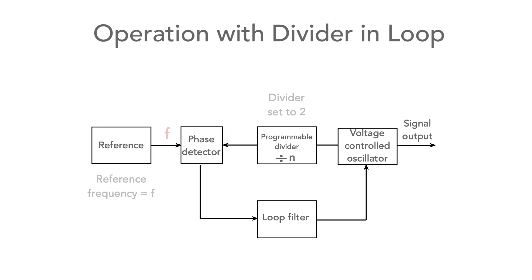First, let's take the example where the divider divides by 2. For the loop to be in lock, the phase error between the two signals entering the phase detector must be constant. In other words, the frequency at the two phase detector inputs is the same. For this to occur, the VCO must be running at twice that of the phase comparison frequency, and hence twice that of the reference oscillator.